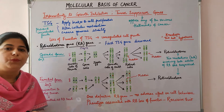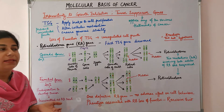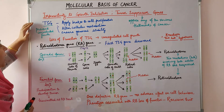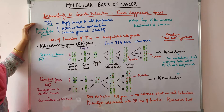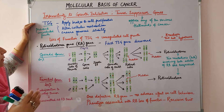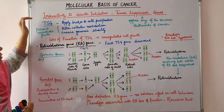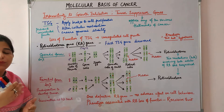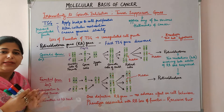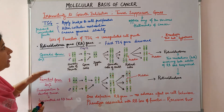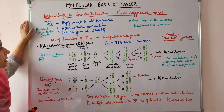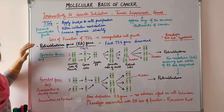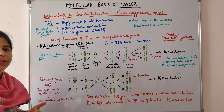Tumor suppressor genes oppose any of the various hallmarks of cancer. They prevent the uncontrolled growth. Initially it was thought that the proteins encoded by the tumor suppressor genes mainly function by applying brakes to cell proliferation and DNA replication. But it is now known that tumor suppressor genes prevent malignant transformation by various other mechanisms, like altering cellular metabolism, ensuring genomic stability. Loss of function of tumor suppressor gene leads to unregulated cell growth.